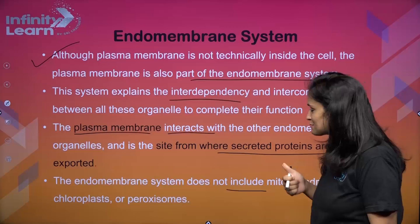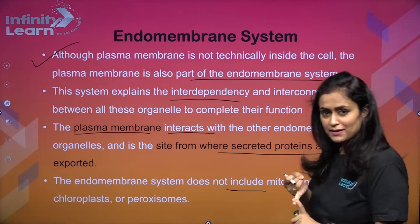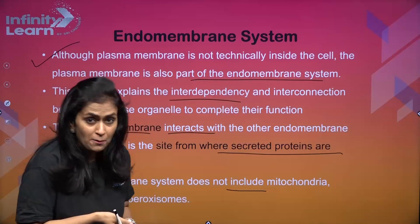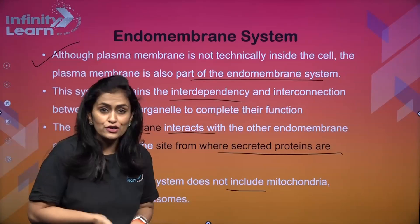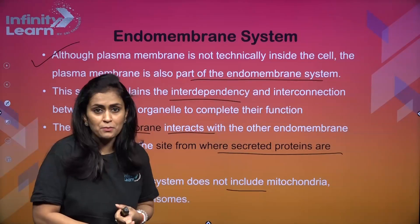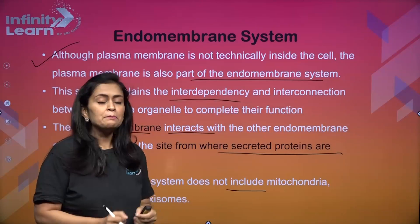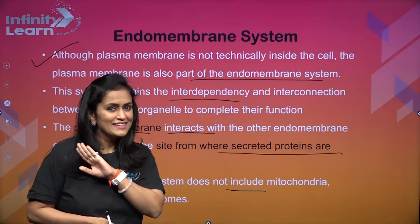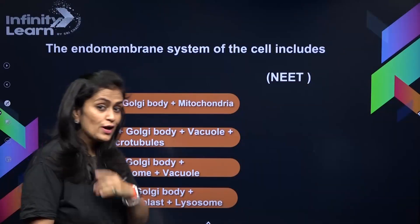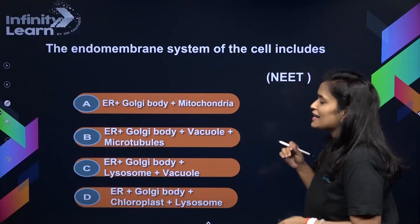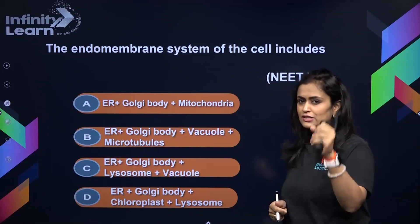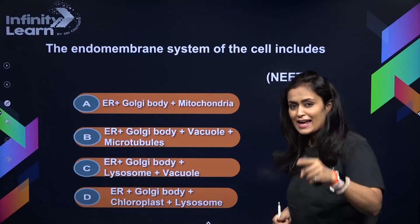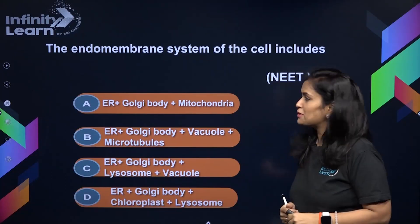So, who are the members? One more time: you have endoplasmic reticulum, vacuoles, Golgi complexes, lysosomes, and plasma membrane. These are the members of the endomembrane system. Can you answer this question for me now? I'm giving you the challenge — is the challenge accepted? If you think you can answer it, put it in the comment box.